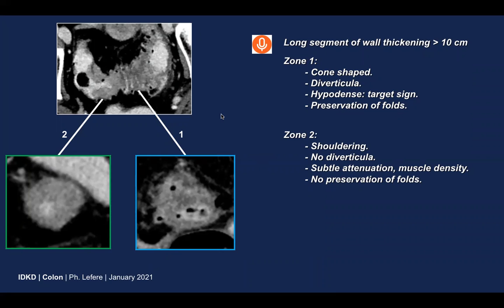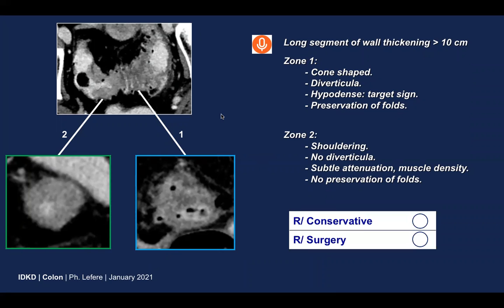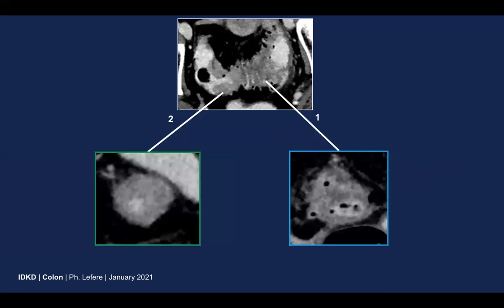So what would you do in this patient? Would you go for conservative treatment or surgery? It is clear that we need to go for surgery, because the second zone has clearly malignant imaging characteristics, whereas the first proximal zone has benign characteristics.